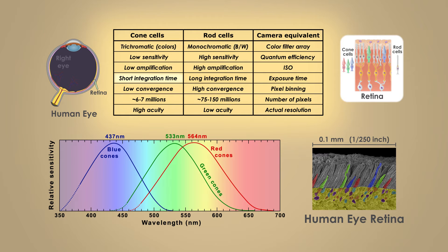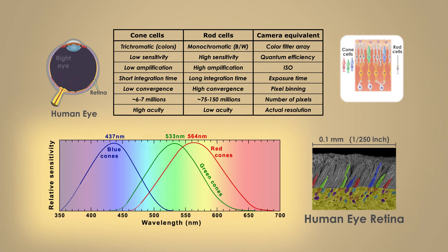Conversely, because cone cells reset faster, they are better at detecting fast motion, and because signals from cone cells are not mixed together as much, they are able to resolve details better in spite of their much lower number. Rod cells are most sensitive to light of relatively short wavelength, meaning blue and green colors. They are barely sensitive to red light, which is why you can use a red lamp in the dark without ruining your night vision.